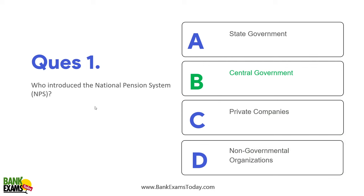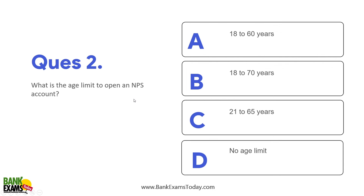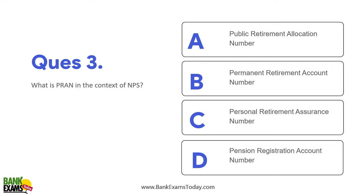Question number two: what is the age limit to open an NPS account? If your age is between 18 to 70, you can open an NPS account. When you open an NPS account, a unique number is allotted to you — that is the Permanent Retirement Account Number, PRAN. This number is portable; even if you change your employer, you can take your PRAN number with you.